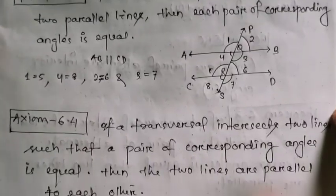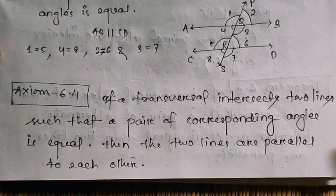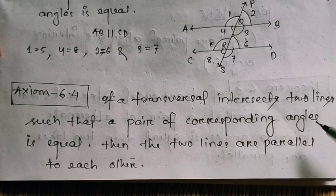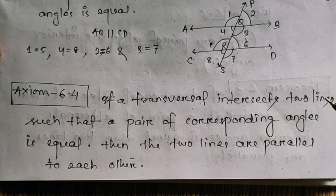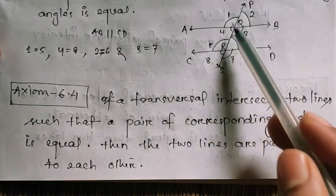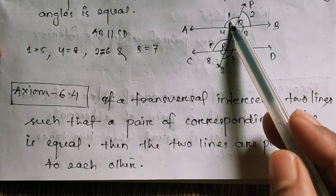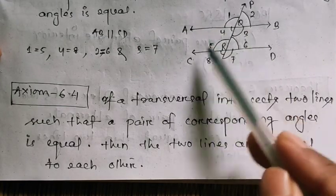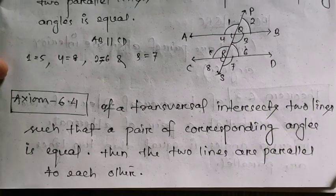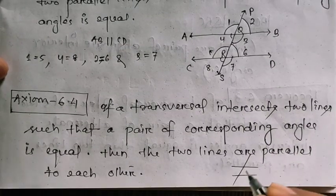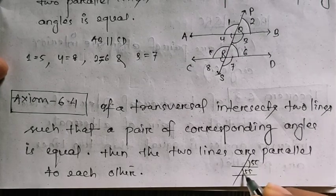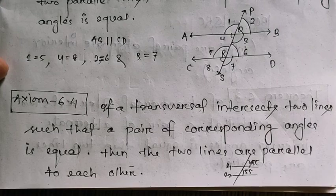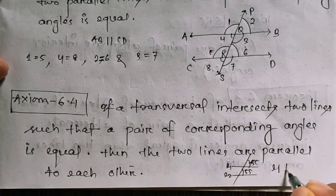Axiom 6.4 states the converse: if a transversal intersects two lines such that a pair of corresponding angles is equal, then the two lines are parallel to each other. For example, if one angle is 55 degrees and the corresponding angle is also 55 degrees, then we can say AB is parallel to CD — or L1 is parallel to L2.